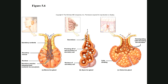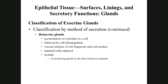Apocrine glands pinch off part of the apical membrane and cytoplasm — the top of the cell is packed full of secretion and that part is chopped off and released. Instead of tiny bubbles, it releases big chunks. Good examples of apocrine glands are mammary glands and the glands in the axillary (armpit) and pubic regions.